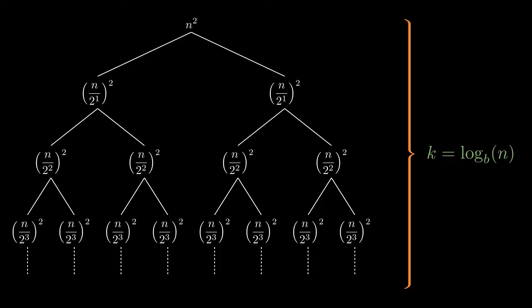Now in order to find the total number of nodes in this tree, we can just raise the branching factor of the tree to the power the depth of the tree. The branching factor is a, because each problem gets divided into a subproblems. So the complexity would be a^(log_b(n)), which can also be written as n^(log_b(a)). This is the complexity of the recursive part of the algorithm.